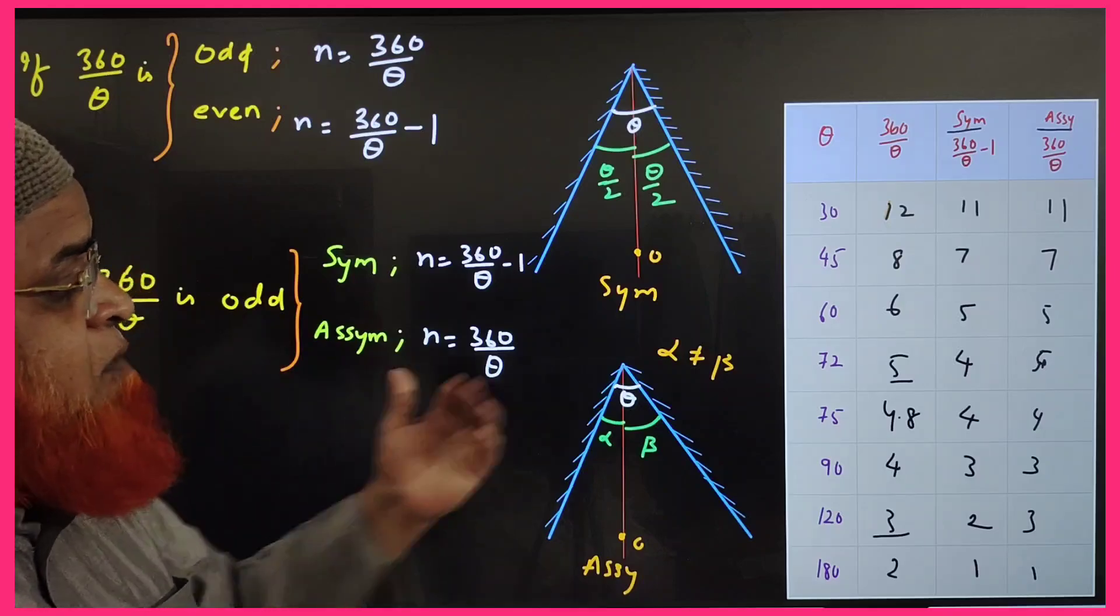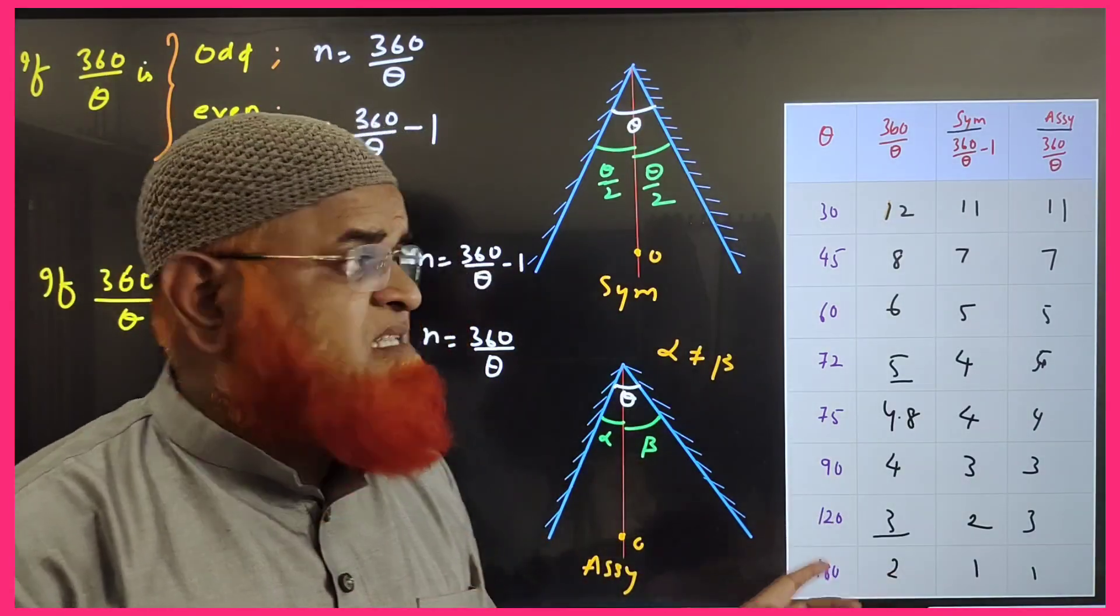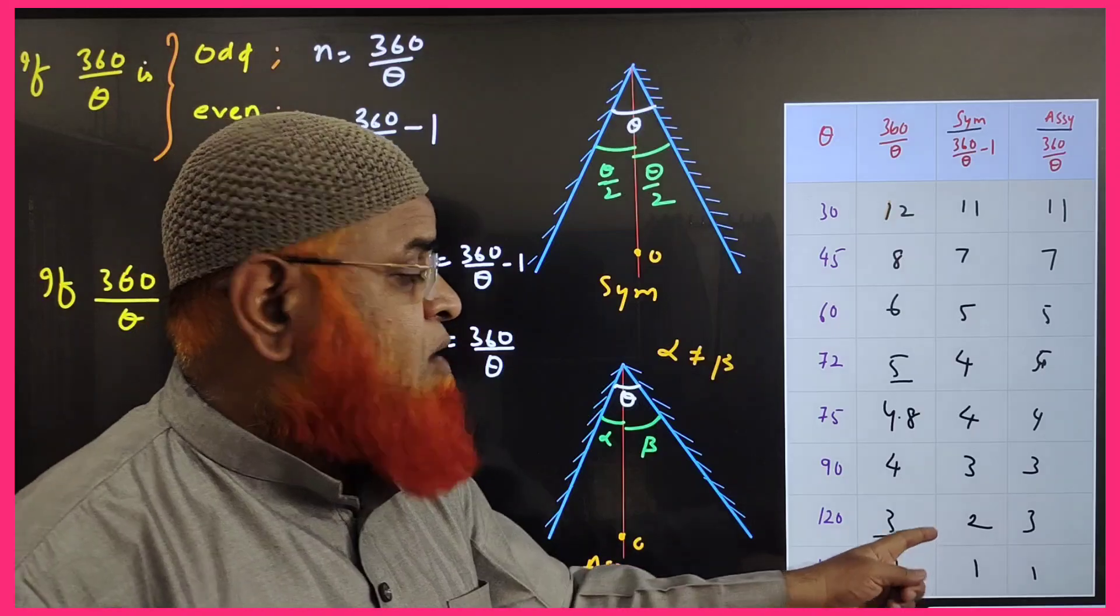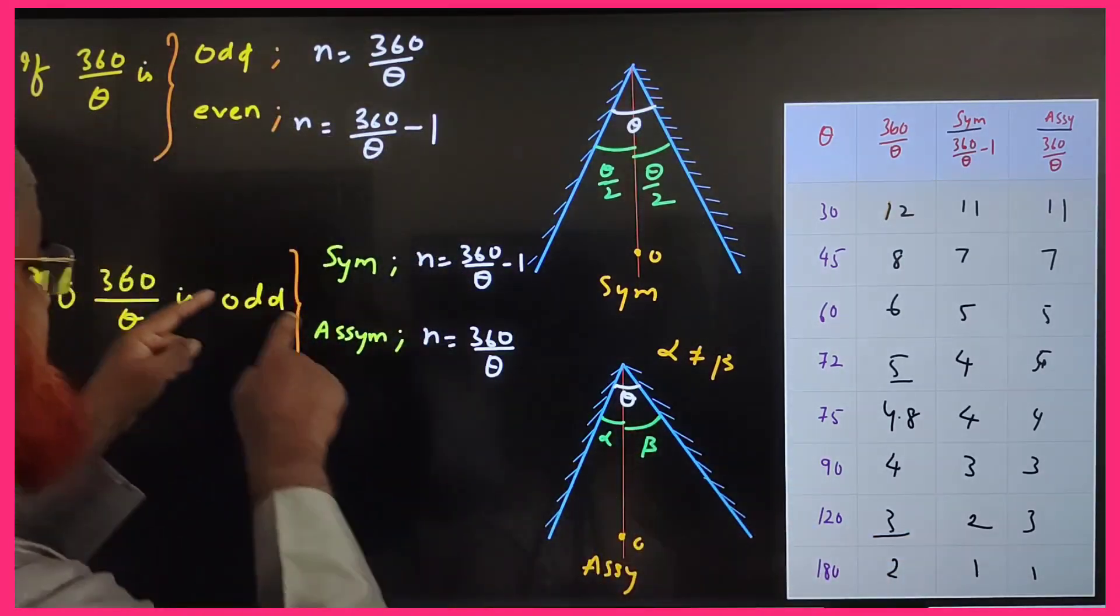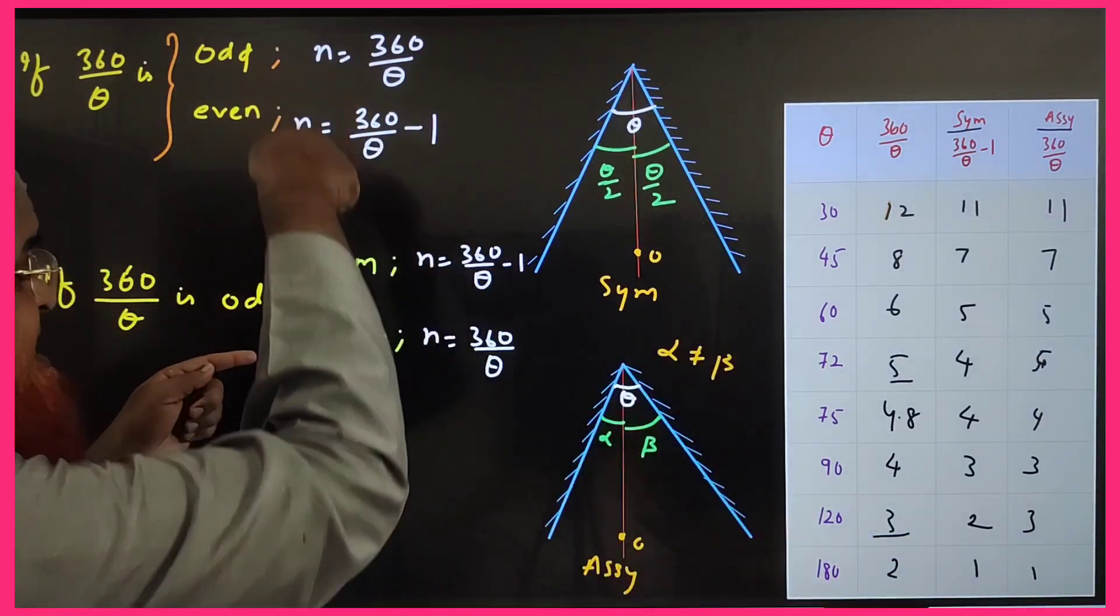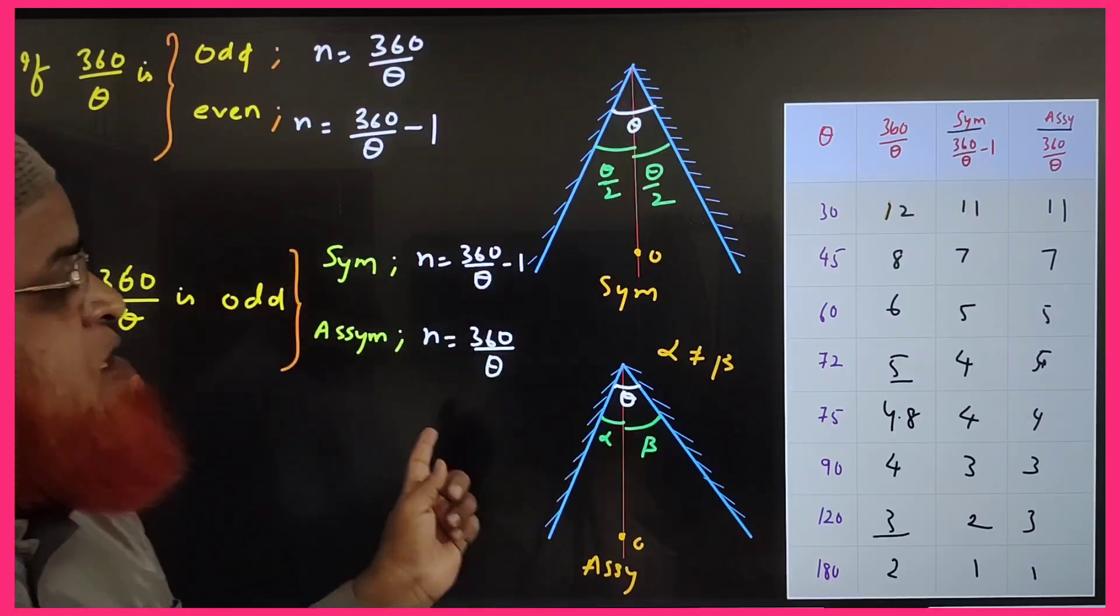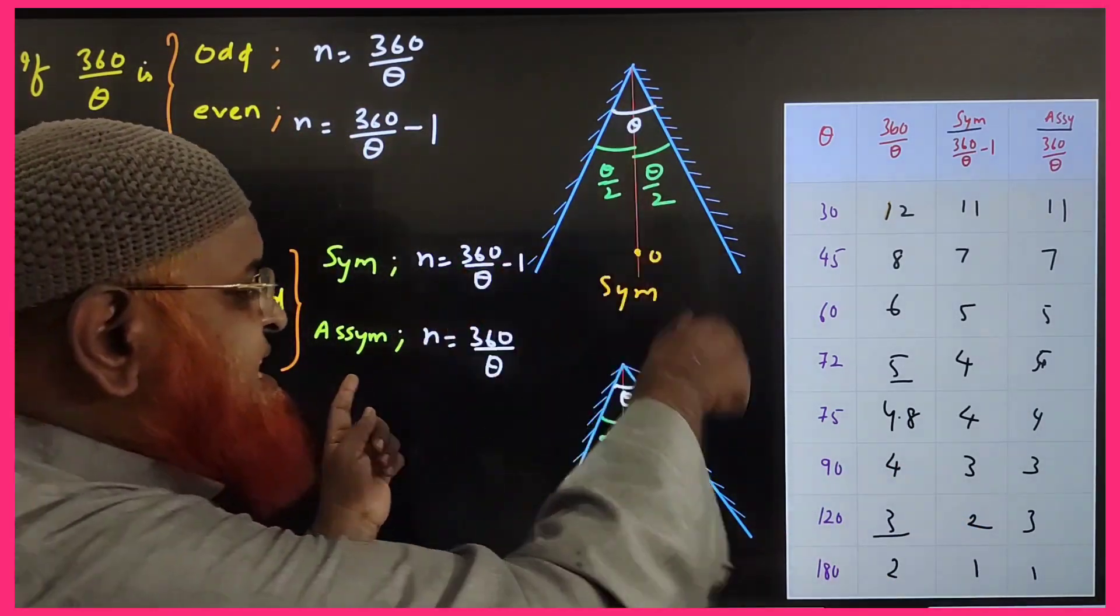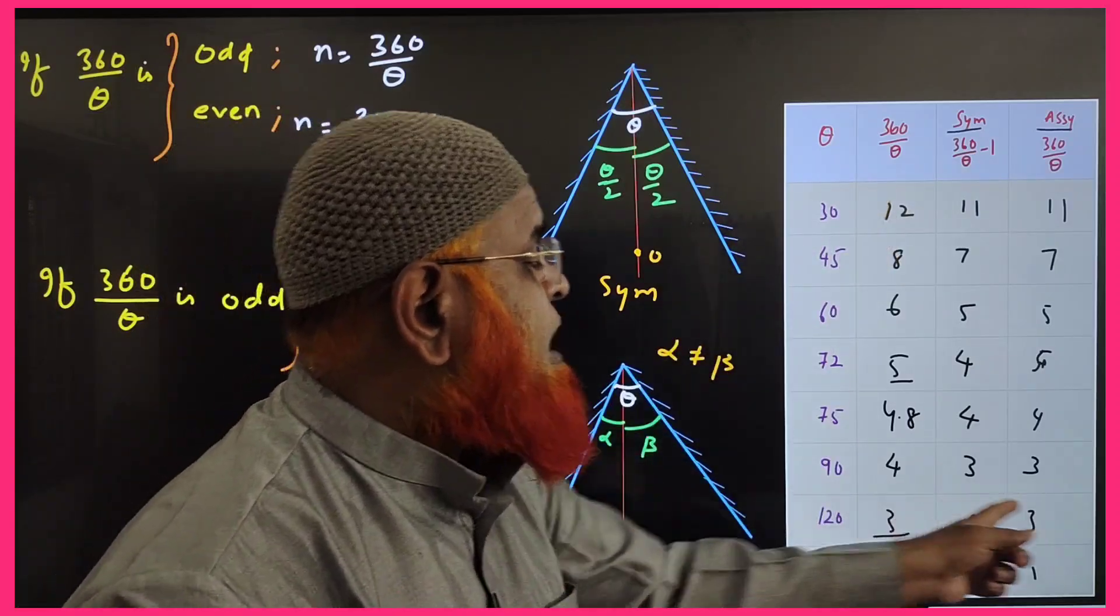Now again, one more case is there: 120 degrees. If you divide, you will be getting 3. This is also an odd number where you have to write sub cases here. The sub cases: if 360/theta, that's 120, is an odd number and symmetry, means 1 less—3 will be getting. Asymmetry means as it is 360 by theta, you have to write 3 here.